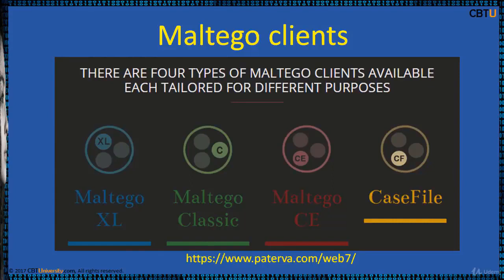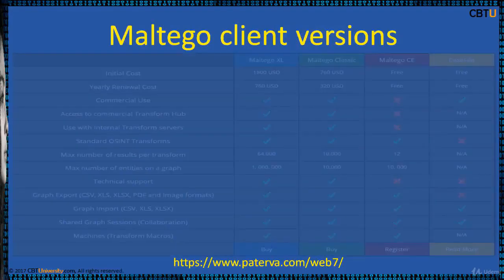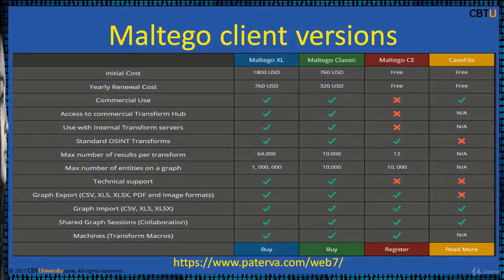There are four types of Maltego clients available: Excel, Classic, CE, and Casefile. The difference between these versions is the number of entities that can be returned from a single transform and the maximum number of entities that can be written in a single graph. Casefile is used by analysts using offline data who do not need access to standard transforms within Maltego.